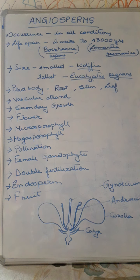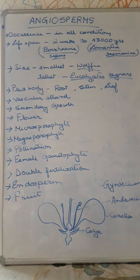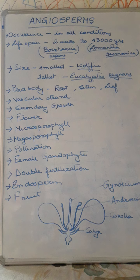Good morning everyone. Today let's start the new topic: angiosperms. In the plant kingdom, we have studied algae, then bryophytes, pteridophytes, gymnosperms, and finally we have reached the angiosperms. This is the highest evolved and advanced group of plants. Whatever flowering plants we see around us, those constitute the angiosperms.